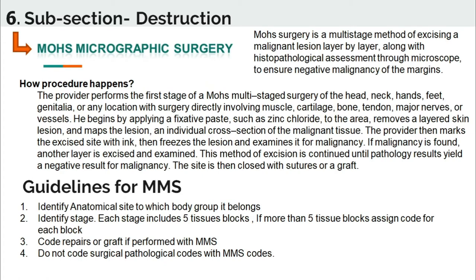The physician will perform this procedure stage by stage on any anatomical site of the body. After removing the tumor or malignant lesion, the physician will excise a layer of the lesion, then divide the tissue into blocks. The physician will then use a microscope to determine whether malignancy is present. If malignancy is found, the physician proceeds to the next stage and excises the layer again, continuing until negative results are found.